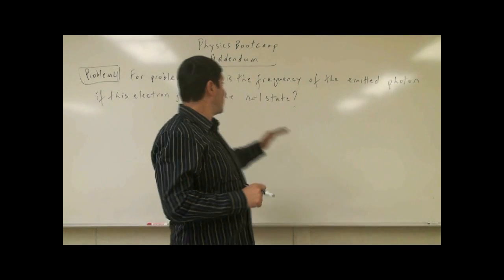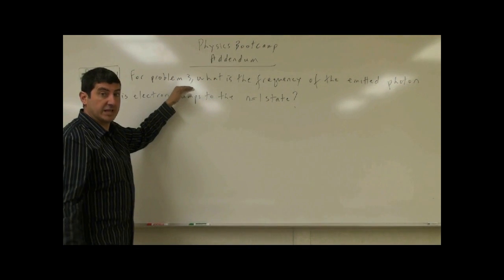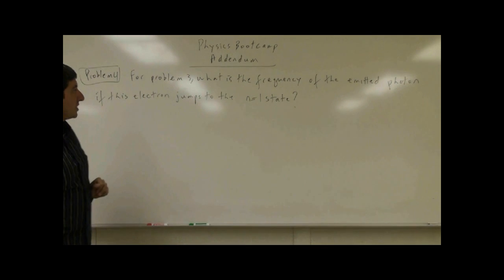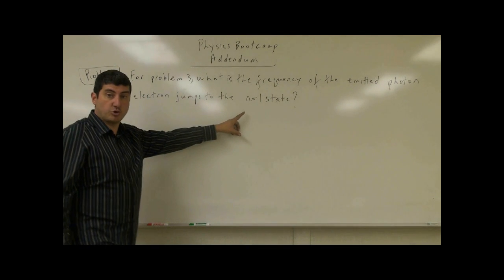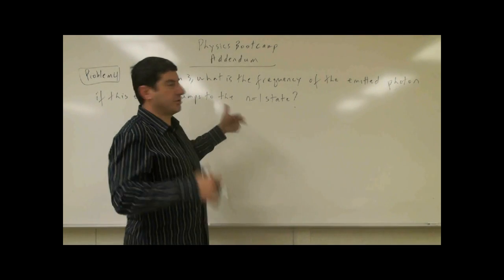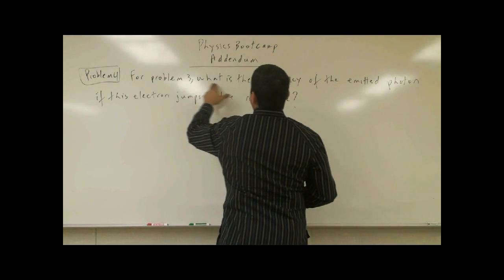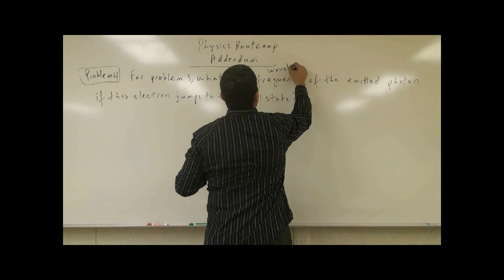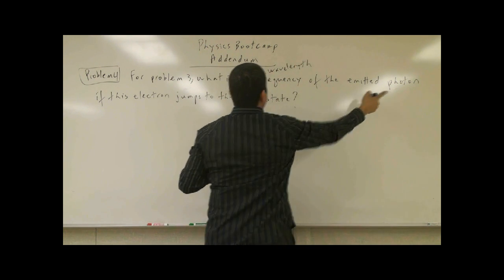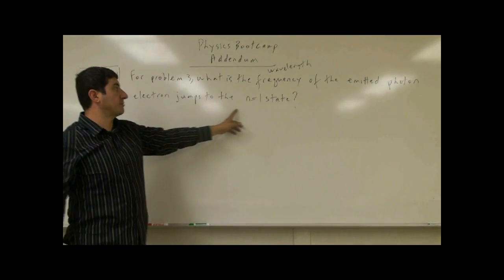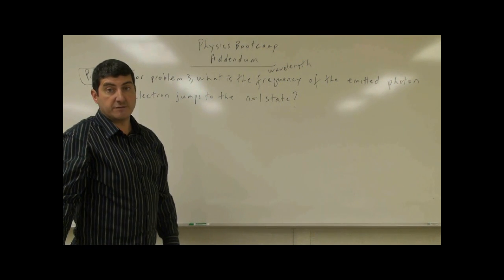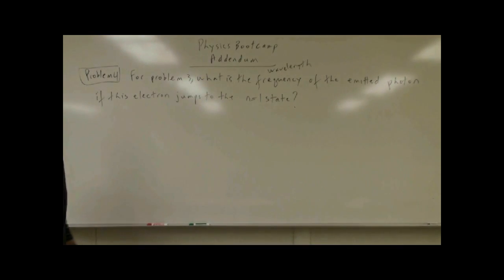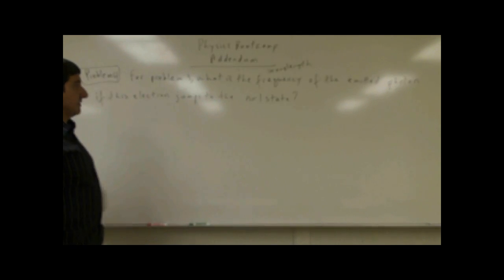Problem 4 of the addendum starts where problem 3 left off. It asks: what is the frequency of the emitted photon if this electron jumps to the n equals 1 state? You could also ask what is the wavelength of the emitted photon if this electron jumps to the n equals 1 state.